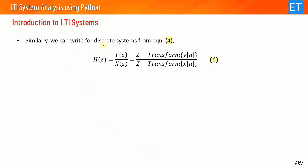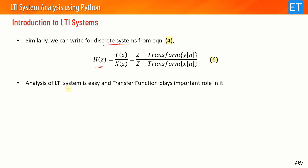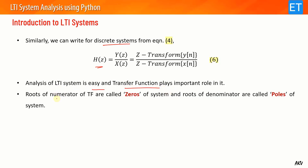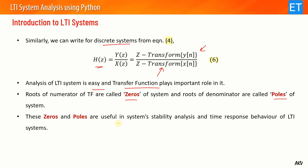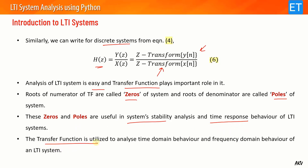Similarly, the transfer function for discrete systems is H(z) = Y(z) / X(z). LTI system analysis is made easy where the transfer function plays a very important role. The roots of the numerator are known as zeros and the roots of the denominator are known as poles. Poles and zeros are very useful in finding system stability, and their placement can also predict time response behavior. The transfer function characterizes the system and is used to analyze both time domain and frequency domain behavior.